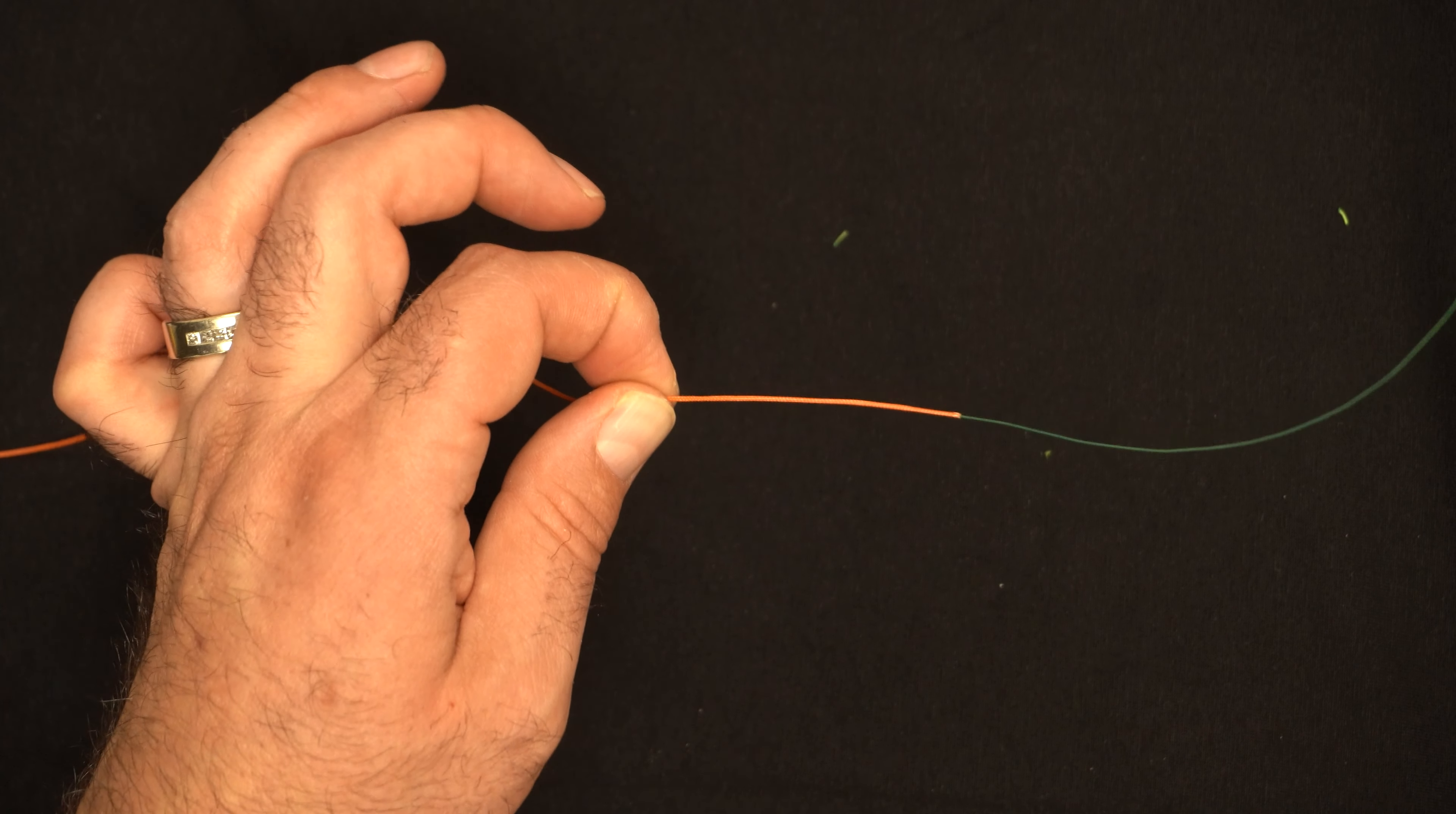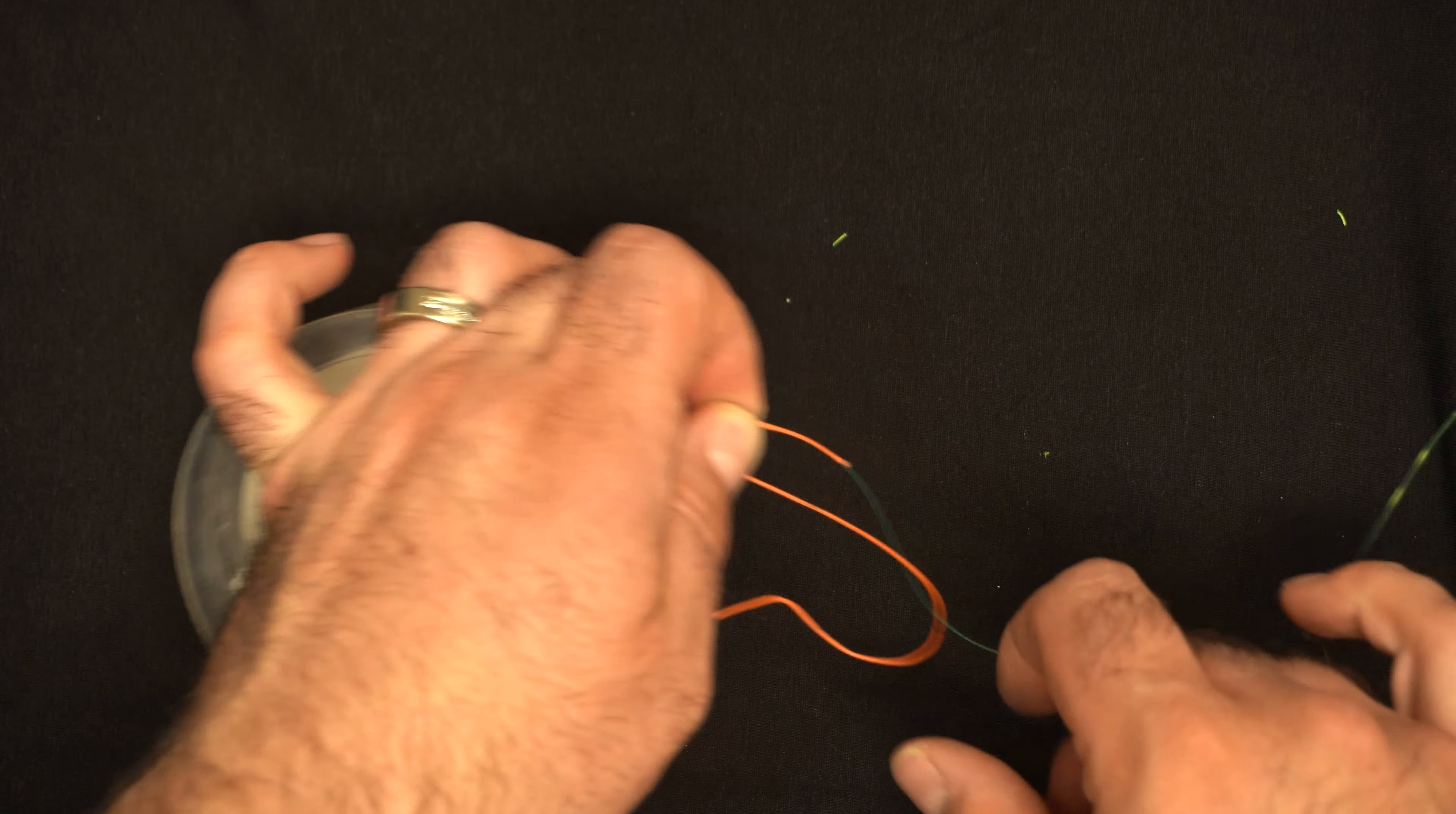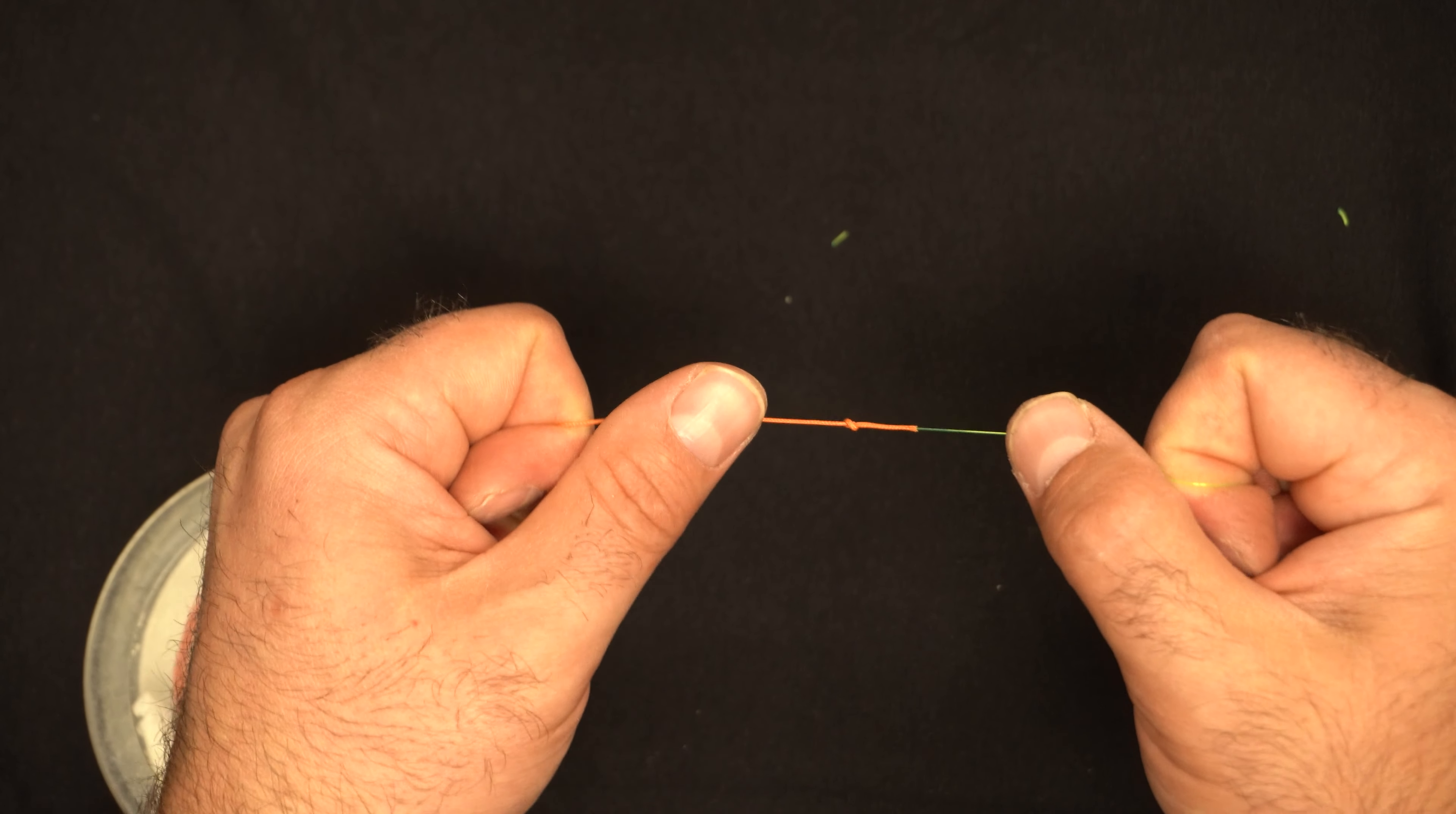So now we're going to pinch this connection. We're simply going to take our spool of lead core and we are going to do an overhand knot. Now we just have to position the knot nice and close to where we inserted the line, and we're simply just going to pull that nice and tight.